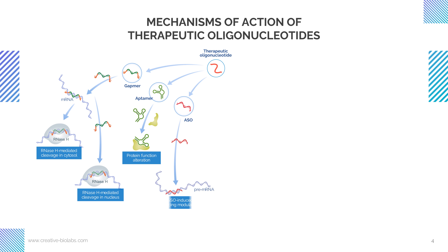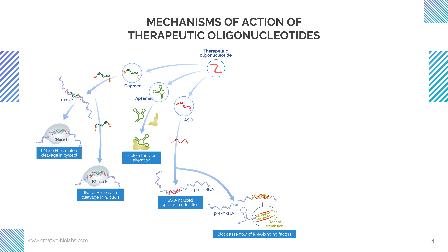Antisense oligonucleotides complementary to target RNA were first utilized therapeutically by exploiting RNase H cleavage of DNA-RNA hybrids. Fully modified second and third generation ASO chemistries act through RNase H independent mechanisms. Steric blocking ASOs can inhibit or activate translation by binding to regulatory elements, and modulation of pre-mRNA splicing is a common therapeutic modality. ASOs can also sterically block the union of RNA binding factors to repeat expansion regions of pathogenic mRNAs.